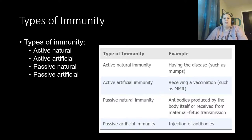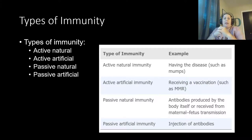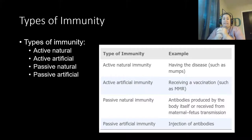Passive artificial immunity is where we actually inject the antibodies — letting the patient borrow them through a shot to help fight off an invader, but no memory cells are created. An example is the Rhogam shot: women who are RH negative who have had an RH positive baby receive antibodies through a shot to help fight the baby's foreign blood, preventing her from making memory cells so that a future RH positive pregnancy isn't attacked.